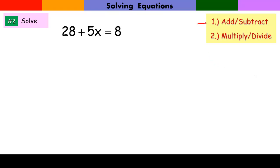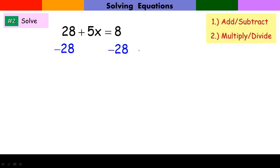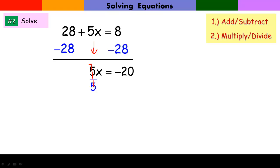Again, we want to add or subtract to get the variable term alone. The constant on the same side as the variable term is 28, so we subtract 28 from both sides. 5x comes along, and 8 minus 28 is negative 20. Our second step: divide by 5 to get x alone. 5 divided by 5 is 1, and negative 20 divided by 5 is negative 4. So the value of the variable that makes this equation true is negative 4.